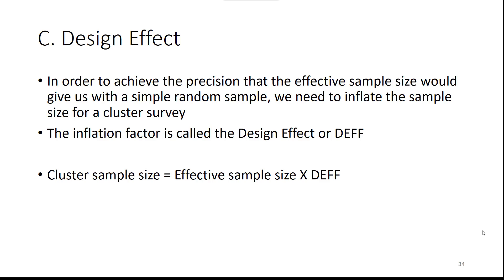The third quantity that we need for our calculations is something we call C, or the design effect. This is the inflation factor that will buy back our statistical power that we lose when we go from a simple random sample to a cluster sample.